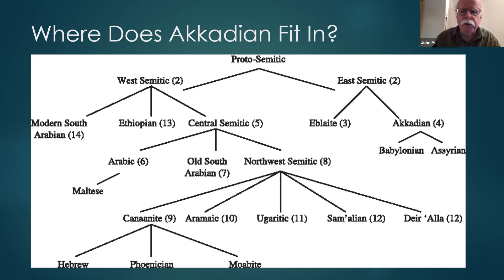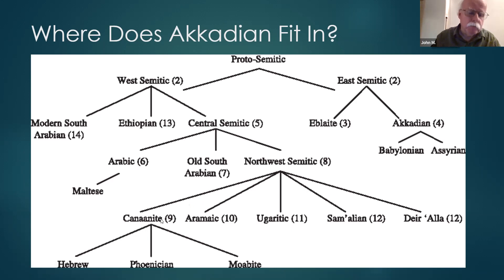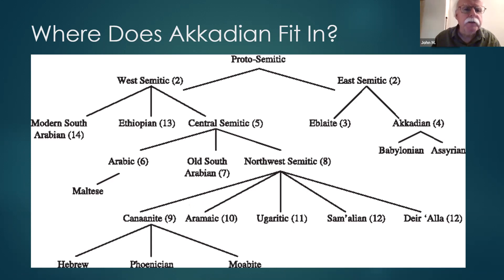Northwest Semitic has many daughter languages — this is only a sample. Northwest Semitic goes down to Canaanite, and Hebrew is an offshoot of Canaanite. Canaanite is attested in a very interesting way; we have documents that seem to contain Canaanite.